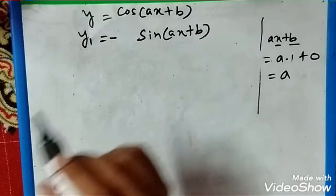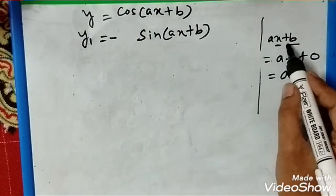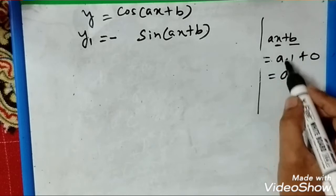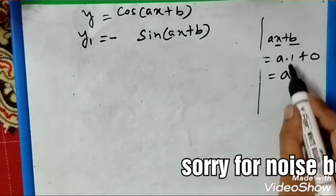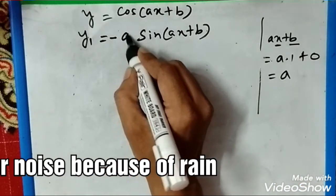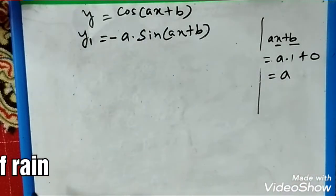But ax + b is a term which must be differentiated using the chain rule. The differentiation of ax is a times 1, because the derivative of x is 1, and the derivative of b is 0. Therefore a is the coefficient. So we write y1 = -a sin(ax + b).